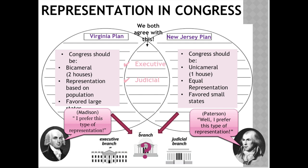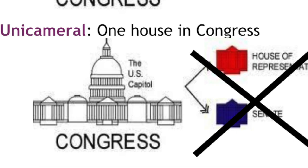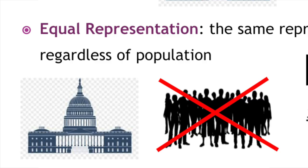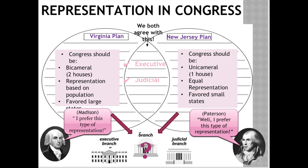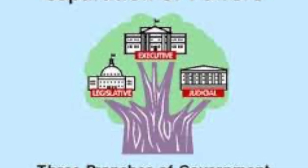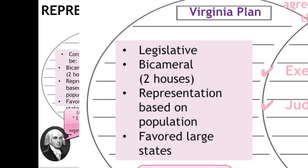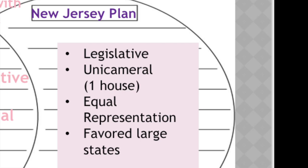The other plan is the New Jersey Plan, which really favored the small states. They said that Congress should be just one house — unicameral — and we should have equal representation, meaning every state gets the same amount of representatives regardless of how many people live there. One thing these two plans have in common, however, is that both the Virginia and the New Jersey Plan agree that we need three branches of government, including an executive branch and a judicial branch in this new constitution.